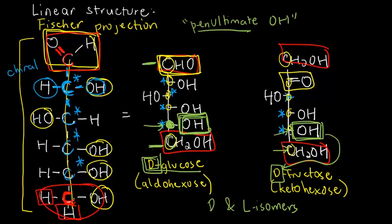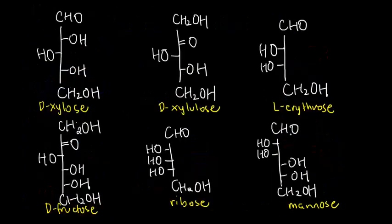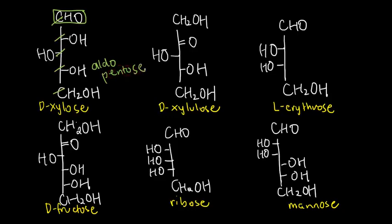So, I think before we proceed to the cyclic structure of carbohydrates, we could do a bunch of practice on these examples. So, let's start with D-xylose. First, let's describe it. First, the functional group is an aldehyde. So, aldo. And then the number of carbons is 1, 2, 3, 4, 5. So, we can say that D-xylose is an aldopentose.